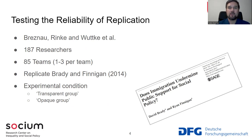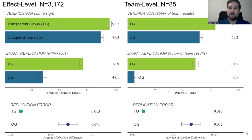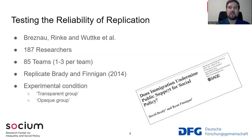I'm going to report results from a study I was involved in, along with my colleagues Eike Marflinke and Alexander Wutke, where we gathered 187 researchers into 85 teams — one to three researchers per team. We replicated an important study in social policy research: 'Does immigration undermine public support for social policy?' published in the American Sociological Review. Their task was to replicate this study by David Brady and Ryan Finnegan. However, there was a twist.